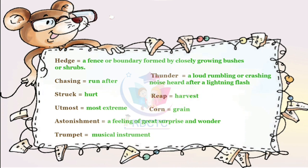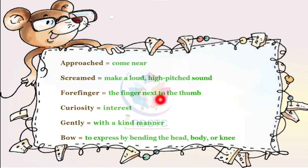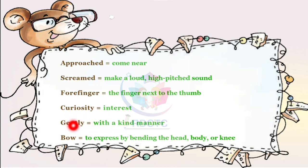Corn means grain. Approached means come near. Screamed means to make a loud, high-pitched sound. Forefinger means the finger next to the thumb. Curiosity means interest. Gently means with a kind manner. Bow means to express by bending the head, body, or knee.